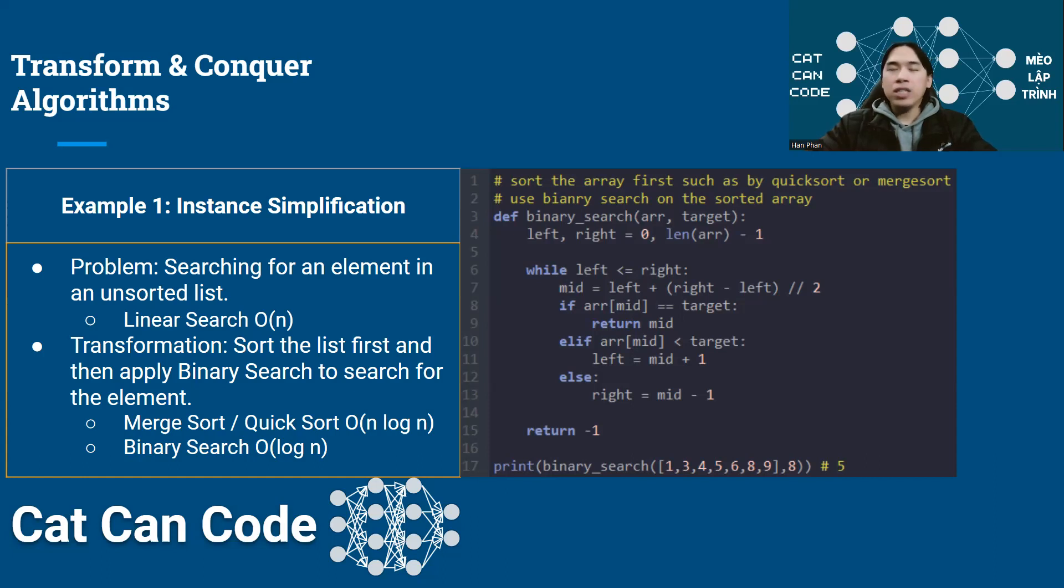Assuming that you will do a lot of searching on this data set, what you can do to improve the search speed is to do the transformation of the problem from an unsorted list into a sorted list. So you're going to do a preparation step where you sort the list first. You can sort the list using an efficient sorting algorithm, for example, merge sort and quick sort. Merge sort and quick sort are quite efficient. You can sort a list with the complexity of O(N log N).